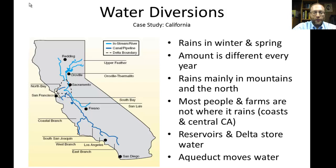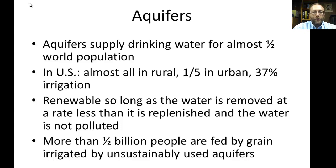Another possible solution is water diversions, used in California. In California it rains in the winter and spring, with unpredictable amounts, and only in the mountains and the north — not where people live or where farms are. People tend to live on the coasts, particularly in the San Francisco and Los Angeles areas, and in the Central Valley where the farms are. So water has to be moved from where it rains to where people need it — reservoirs store it, and aqueducts pump it to where it's needed.